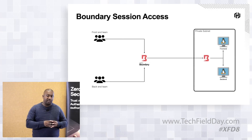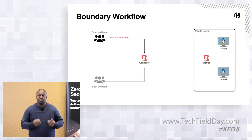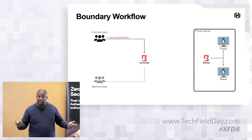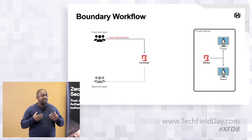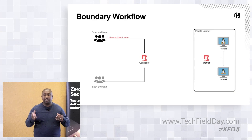Everything I do has to go via the controller. As a user, I need to authenticate to Boundary. Like Vault and Console, Boundary has auth methods. We have two primary auth methods: user-pass, and OIDC. With OIDC, we can bring our identity providers into Boundary without having to manually replicate our user database. For example, with Azure Active Directory, when I go to log into Boundary, it redirects me to Azure, I log in, and it redirects me back to Boundary — authenticated using Azure as the identity server.